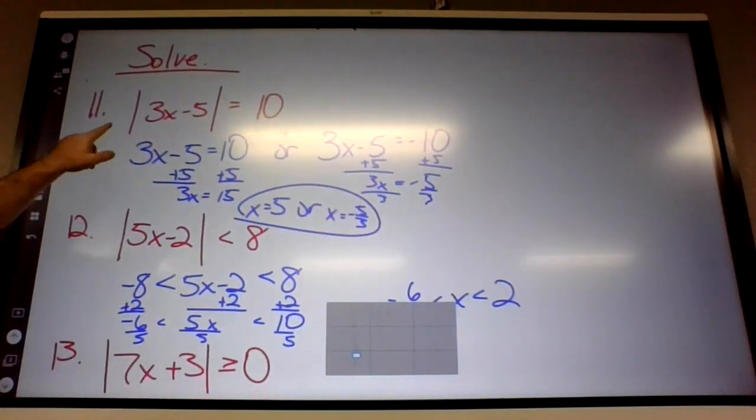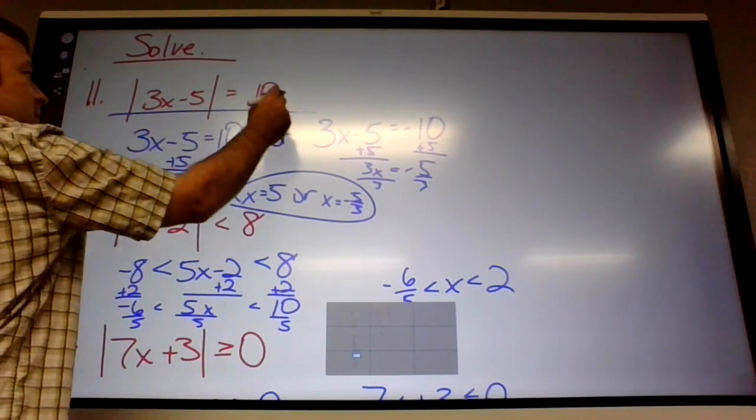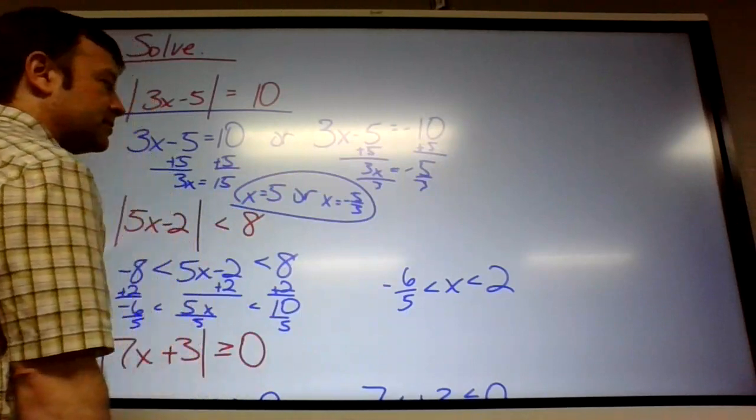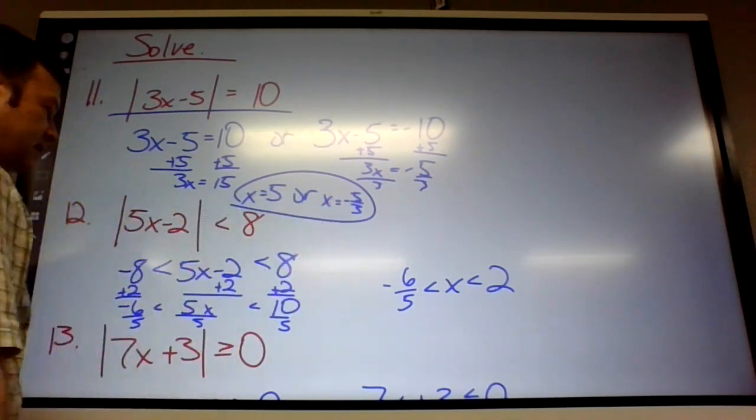And then solving absolute values. So remember when you're solving absolute values, you have to set it up as two different things. This equals 10 or this equals negative 10. And then just do normal stuff. And that's what I got for the answer.